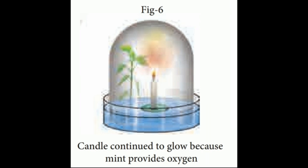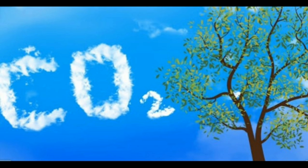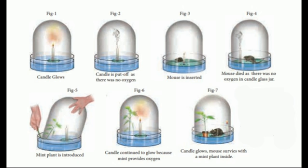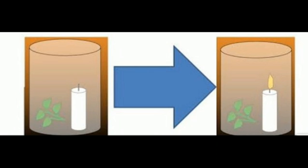In the fourth experiment, he took a jar, burned a candle and converted all the oxygen into carbon dioxide. He then placed a small plant and a mouse into the jar. Both the plant and mouse survived. He found that plants and animals have a symbiotic relationship — animals consume oxygen and release carbon dioxide, and plants take up carbon dioxide and release oxygen.